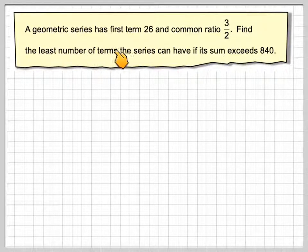A geometric series has the first term of 26 and a common ratio of 3 over 2. Find the least number of terms the series can have if its sum exceeds 840.